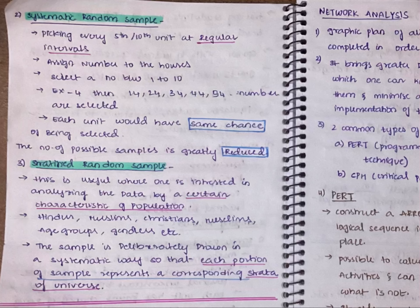This is systematic random sample. Here each unit would have same chance of being selected, whereas in the first one, in simple random sample, each unit would have equal chance of being selected. 1 to 150 everyone can get selected, but here it has same chance, and the number of possible samples is greatly reduced. Whereas in simple random sample, the number of possible samples were high, but here they are getting reduced.